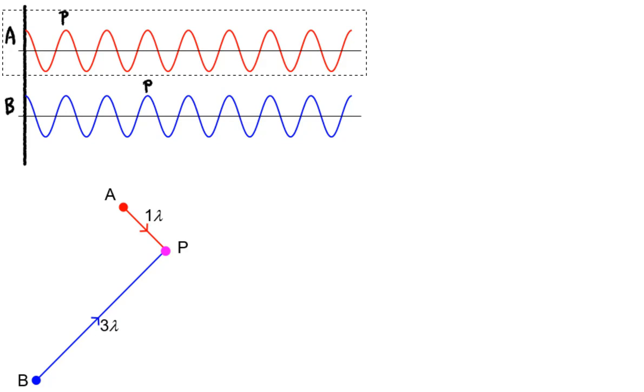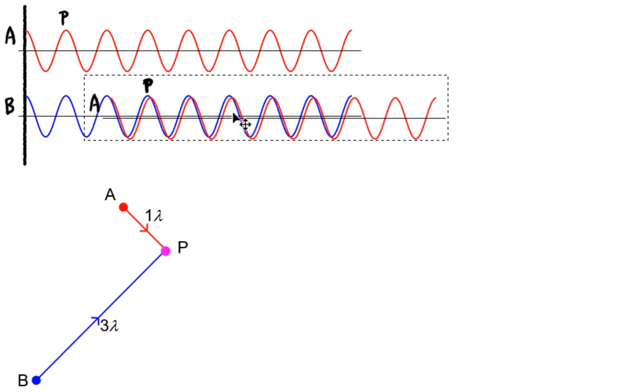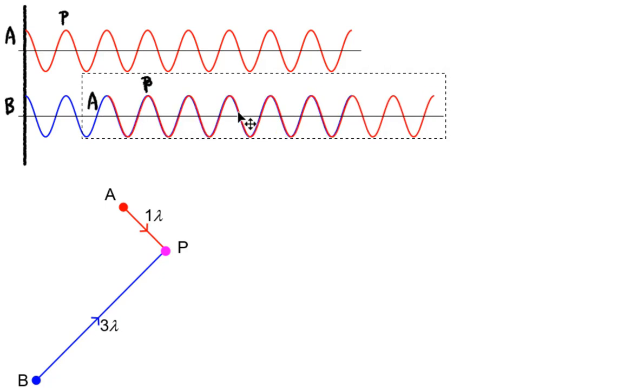So as far as P is concerned, it's seeing two waves that are arriving in phase. Two waves that are superposing in phase. So what we are going to get at P is a constructive interference.